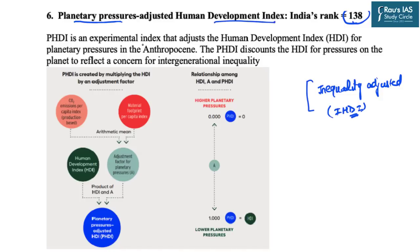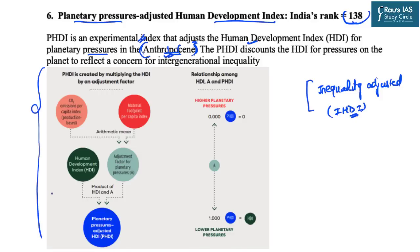This is an experimental index that adjusts the HDI for planetary pressures in the Anthropocene. The Anthropocene is the geological era in which human activities are the most dominant ones. It takes two things into account: CO2 emissions per capita index and material footprints per capita index. Their arithmetic mean is calculated and adjusted for planetary pressures combined with the HDI to get the PHDI.